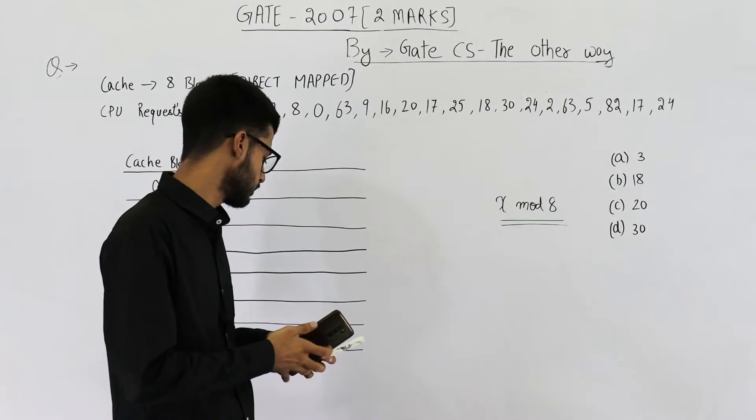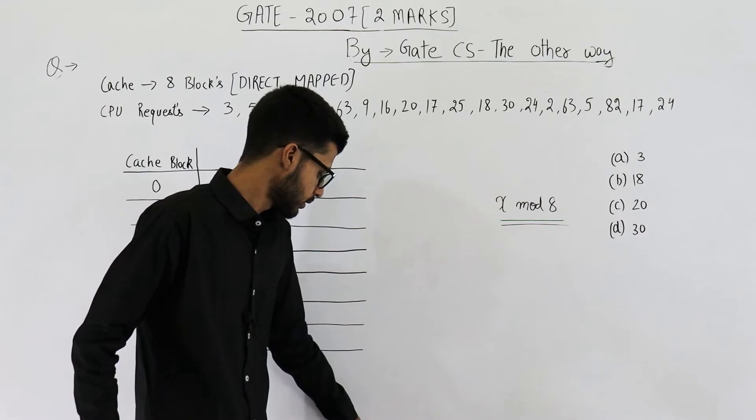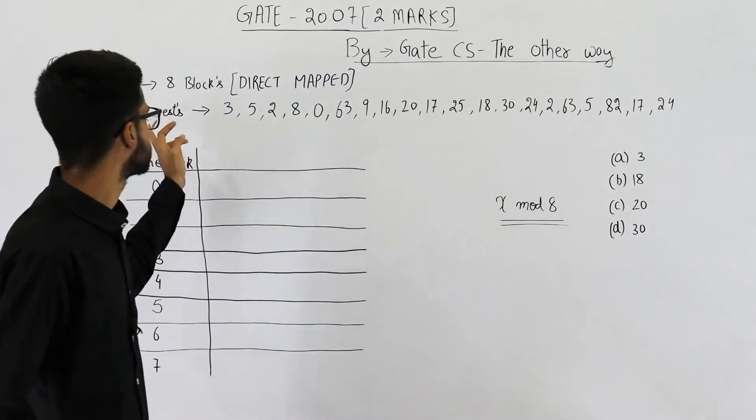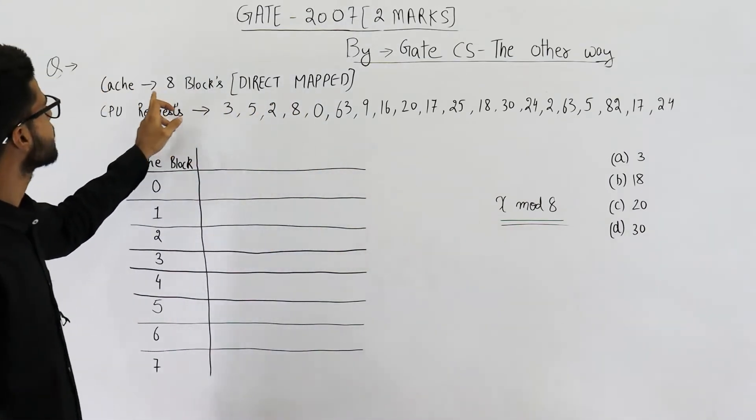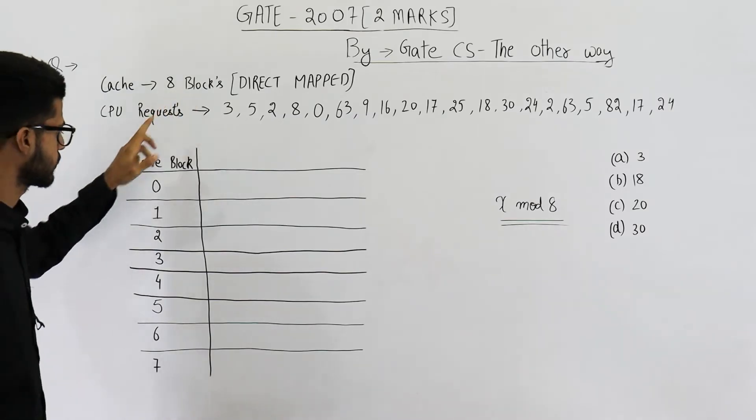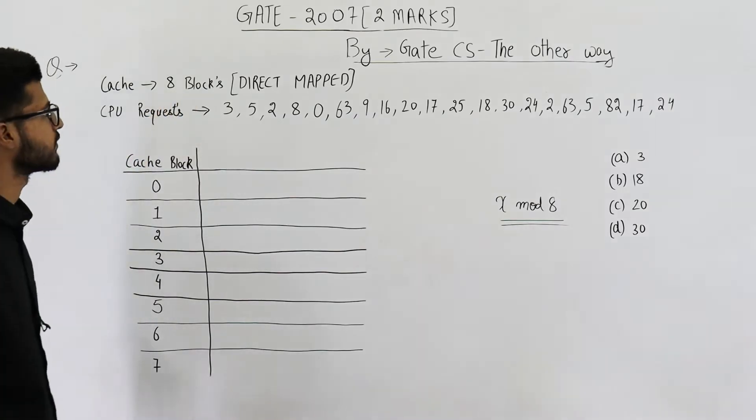Okay, so the CPU requests are written here. Also, it's a cache with 8 blocks. That means these 8 blocks numbered from 0 to 7.